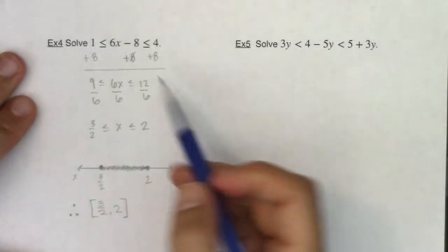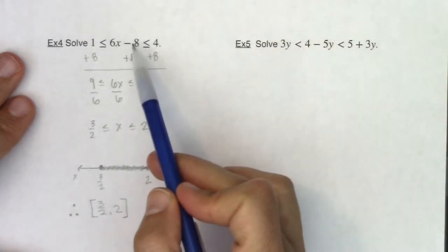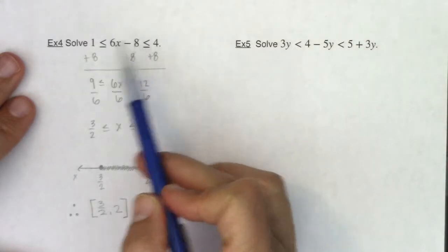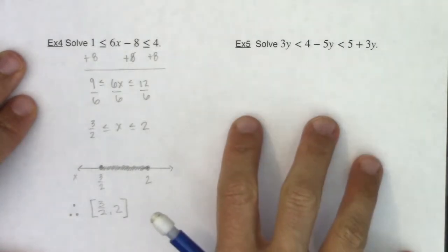Okay, so when you have three parts to your inequality, you solve it the same way. Whatever you do to one part of your inequality, make sure you do to all three parts. So for this one, let's take a look at what we want to do here.